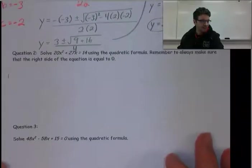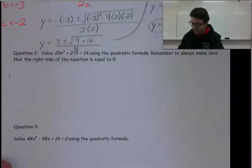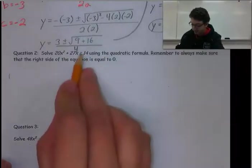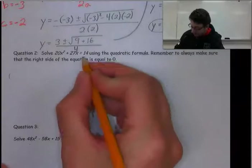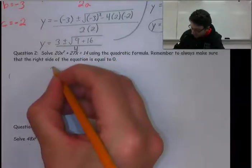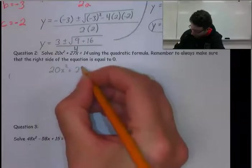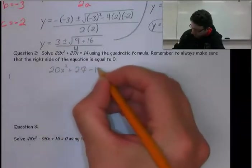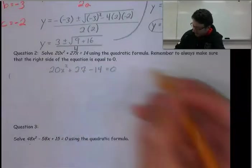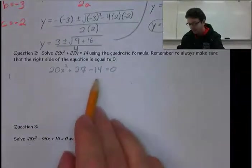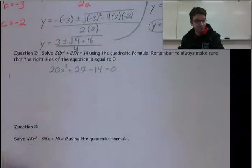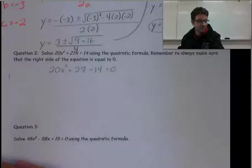For the next question, we need to have it equal to 0, whereas this one equals 14. So the first thing we're going to do is subtract 14 from both sides so that our equation equals 0. Now we can identify our coefficients. We can also see how this would be difficult to factor.